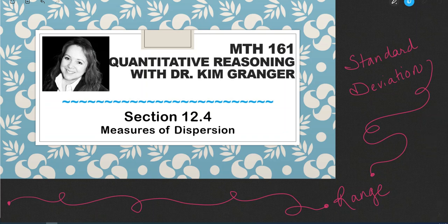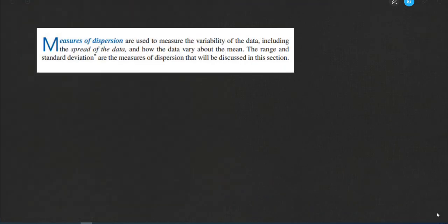In this video, we'll continue our study of statistics as we look at measures of dispersion. Specifically, we're going to be looking at standard deviation and range. Dispersion has to do with how the data in a set is spread out. So measures of dispersion are used to measure the variability of the data, including the spread of the data and how the data vary about the mean. The range and standard deviation are the measures of dispersion that we're going to be looking at in this section.